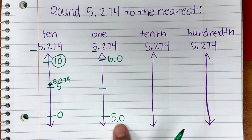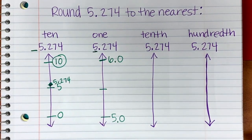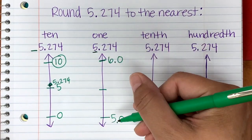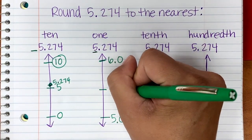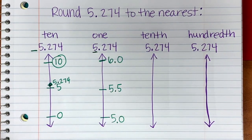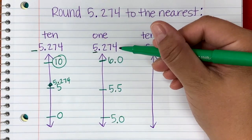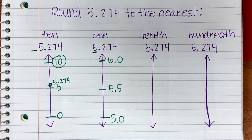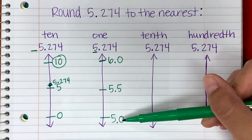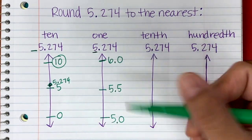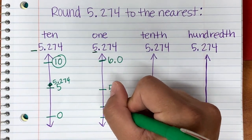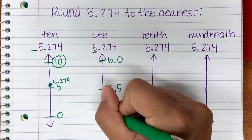If we write 5.0 and 6.0, they look like 50 and 60, and the midpoint between 50 and 60 is 55. So as long as we put the decimal in the right place, we know the midpoint between 5 and 6 is 5.5. Now we plot 5.274 on the line. Since 5.274 falls between 5.0 and 5.5, it lands somewhere in between — we go ahead and plot it.